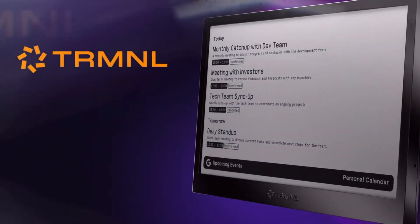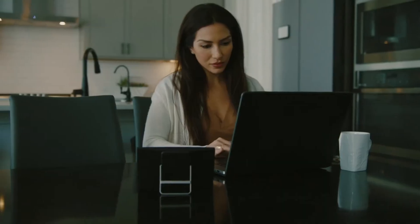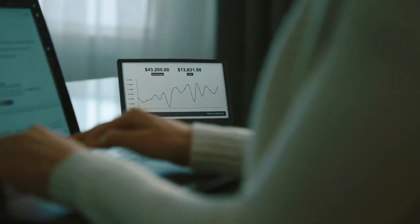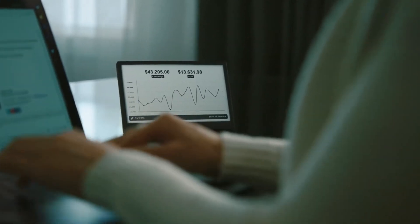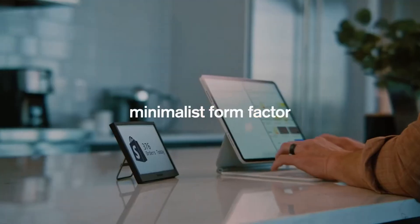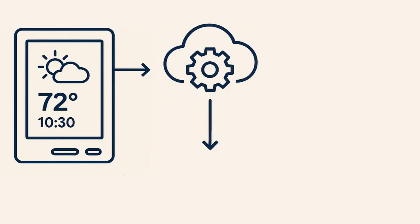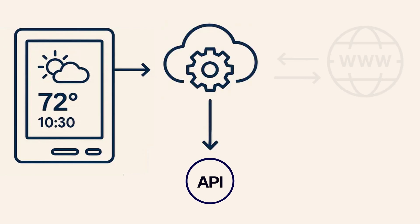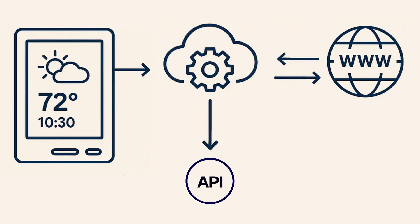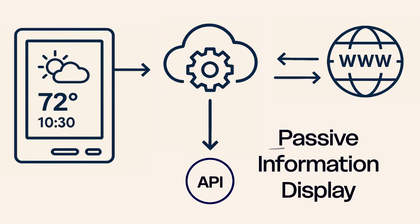Terminal isn't trying to be everything to everyone. It's a dedicated e-ink device designed specifically for focused information display. No flashing lights, no battery anxiety. It uses a one-way communication architecture — nothing can reach back into your network. It gets data, displays it, and that's it. For anyone security-minded, this is huge: no attack surface, no back doors. Just pure, passive information display.